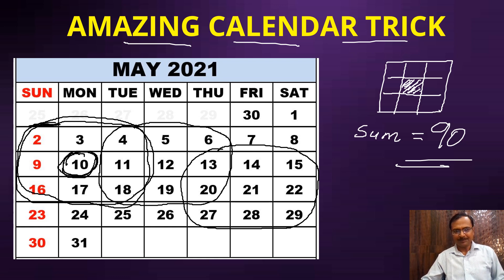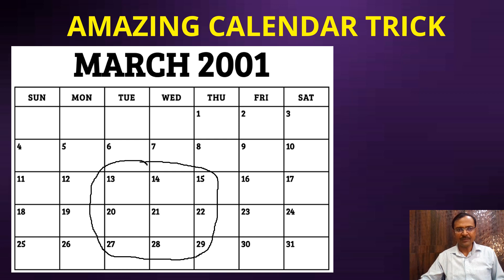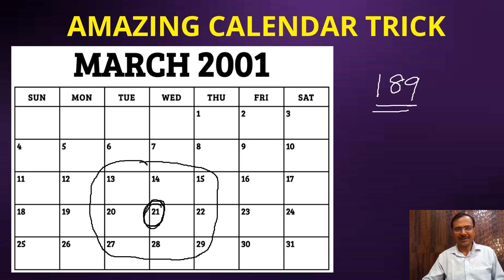Let's see another example. I'll take a calendar of a previous year — March 2001. If you ask your friend to select any block of nine numbers randomly, and he selects a particular block and tells you the middle one is 21, you immediately tell him that the sum of those nine numbers is 189. Even you must be surprised — why and how is the answer 189?